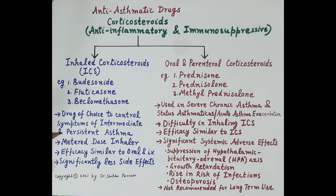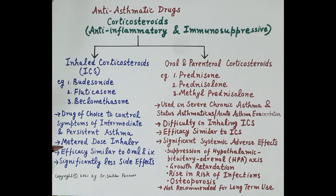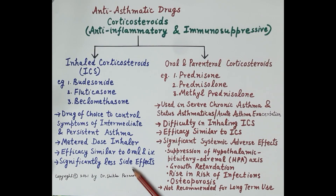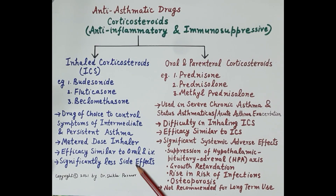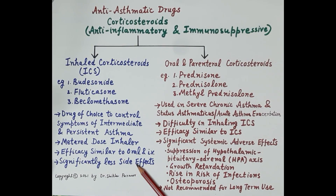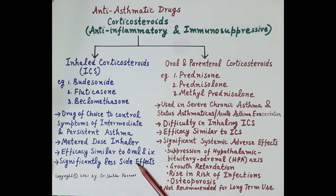Inhaled corticosteroids are the drug of choice to control symptoms of intermittent and persistent asthma. Puffs are taken using metered dose inhalers. The efficacy of inhaled corticosteroids is similar to oral and intravenous steroids; however, they exhibit significantly fewer side effects since they are delivered directly to the lungs and smaller doses are required.